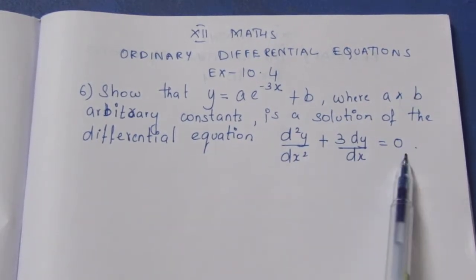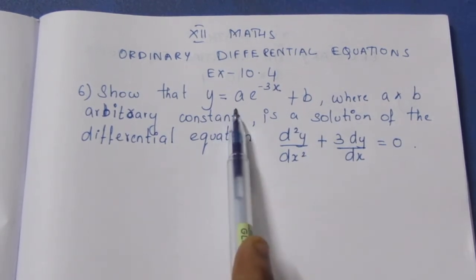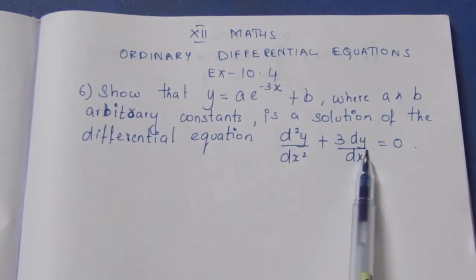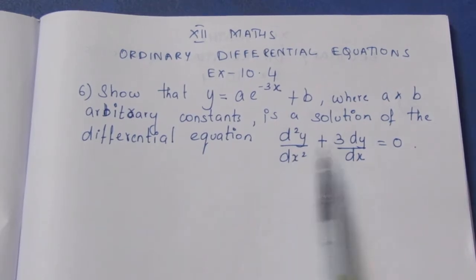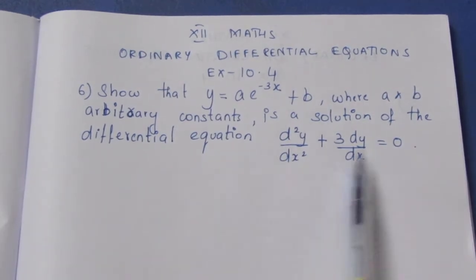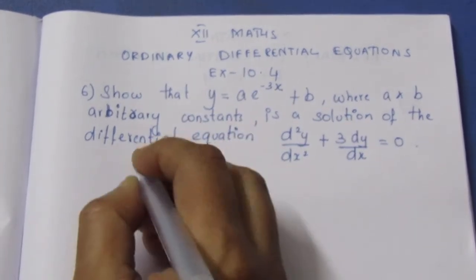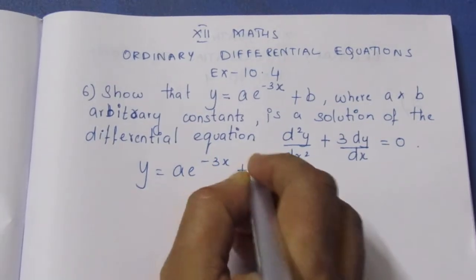We need to substitute this into the equation and prove it equals zero. Given y equals ae to the power minus 3x plus b, we will find dy by dx and d squared y by dx squared, then substitute to verify this is the solution.